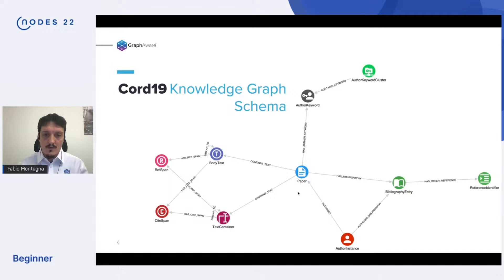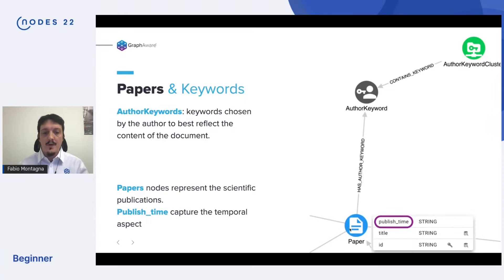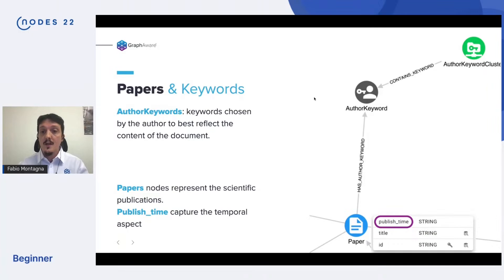We are interested mostly in this central part. Down here we have papers, which are nodes representing scientific publications. They get published continuously over our timeline, so we track that in the published time property. Up here we have another type of node — the author keywords — which are keywords chosen by the author to best reflect the content of the document.